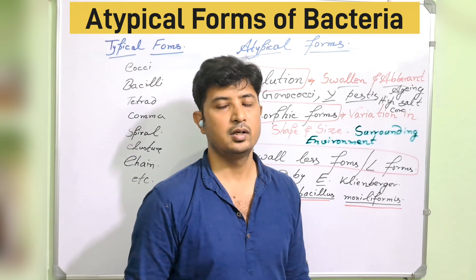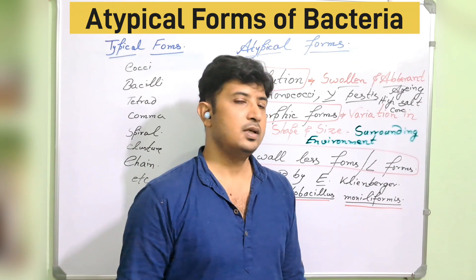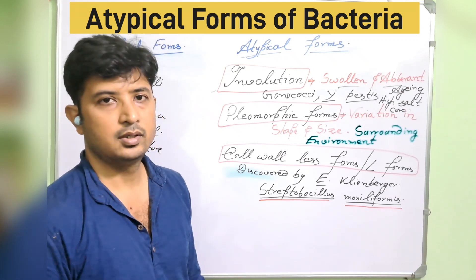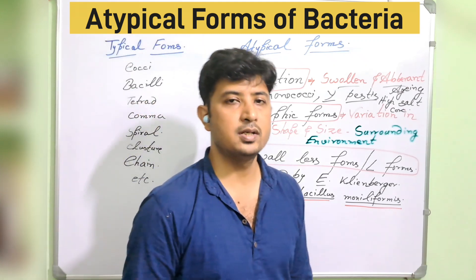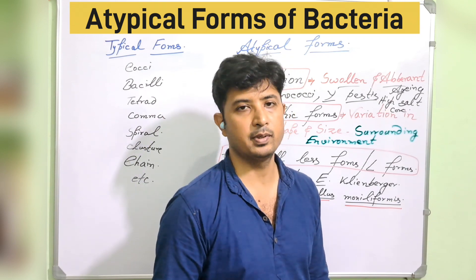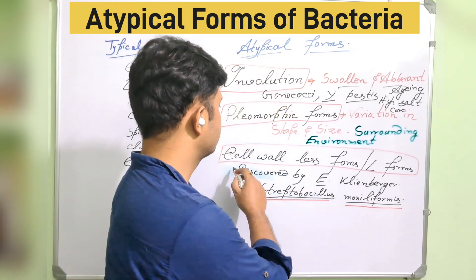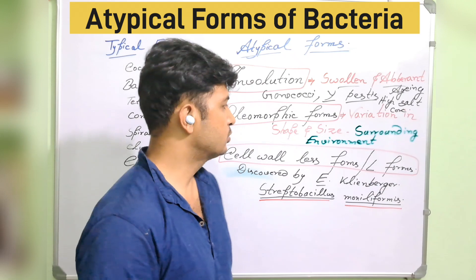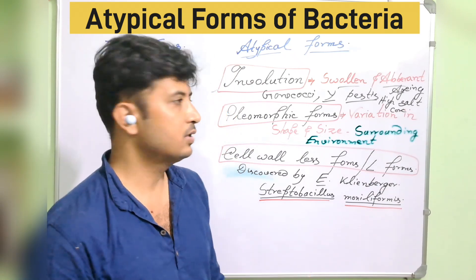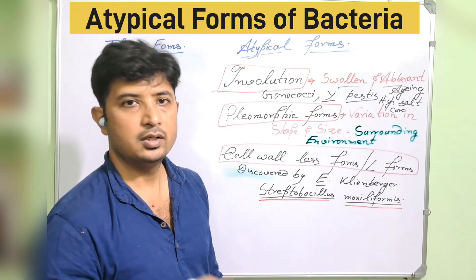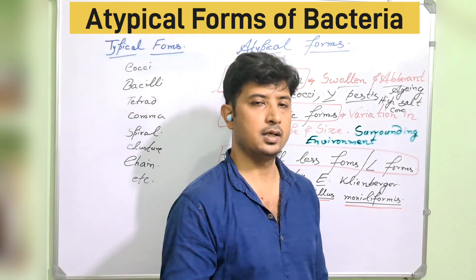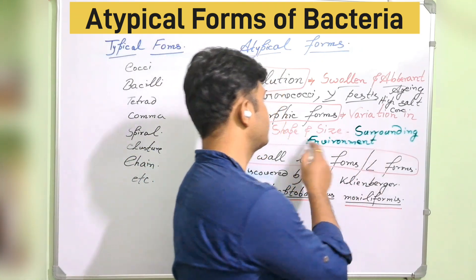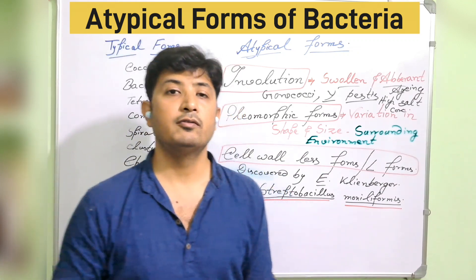Now coming to the second atypical form — pleomorphic. Most of you will say Mycoplasma is a pleomorphic bacterium, and yes that is an old concept. Mycoplasma can be considered pleomorphic to some extent, but it is not a typical pleomorphic bacterium. It will actually come under the cell wall-less forms because Mycoplasma does not contain a cell wall. So remove the Mycoplasma example from your mind when thinking about pleomorphic forms.